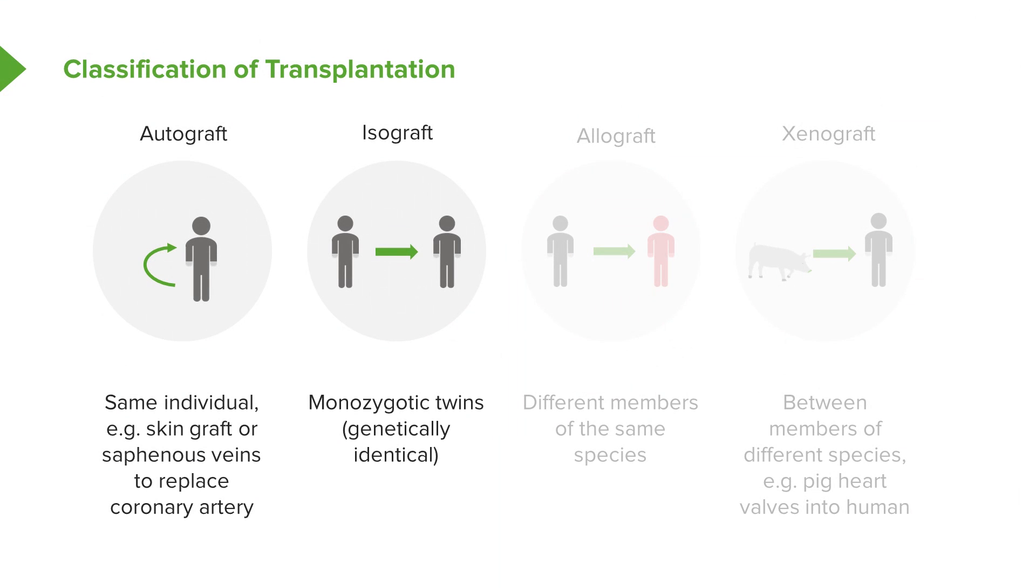An isograft is between genetically identical, in other words, monozygotic twins.